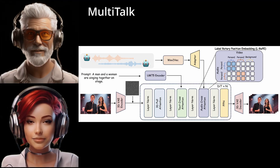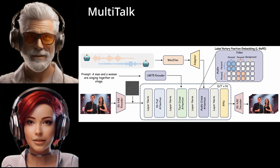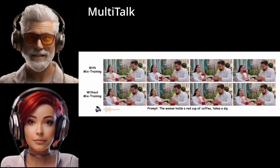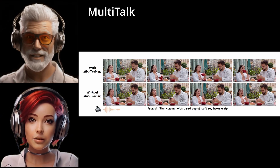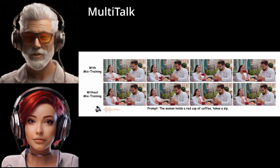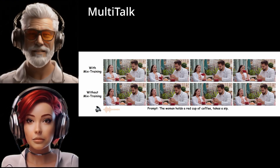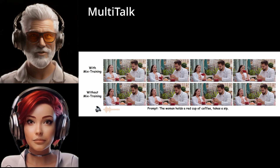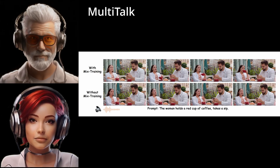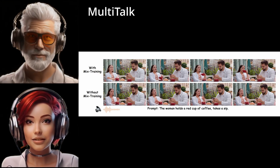The way they train the system sounds clever too. The paper talks about partial parameter training and multitask training. Partial parameter training means they only fine-tune some parts of the underlying AI model. The clever part is this preserves the original model's ability to understand instructions well — if they trained everything, you might actually lose some of that capability and get weird distortions. And then there's multitask training: they train the model on a mix of tasks, like generating video from audio and images, but also just from images alone. It keeps the system robust and good at following those detailed prompts.